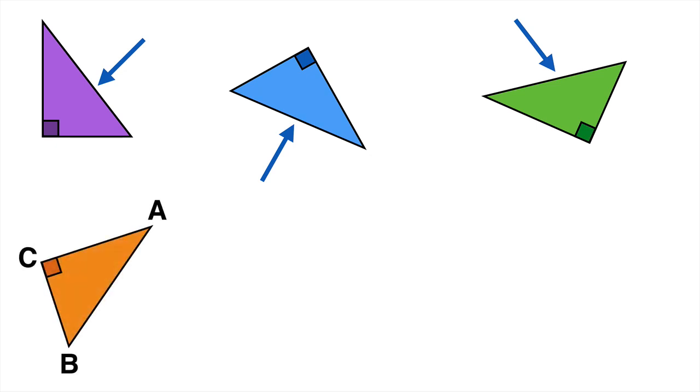When we start naming sides, we can identify the hypotenuse, which is this one, as AB, and in this one, it's the side g.